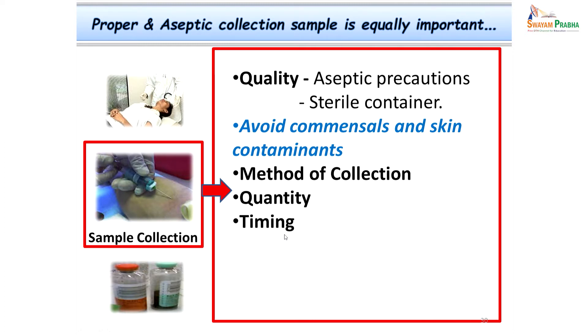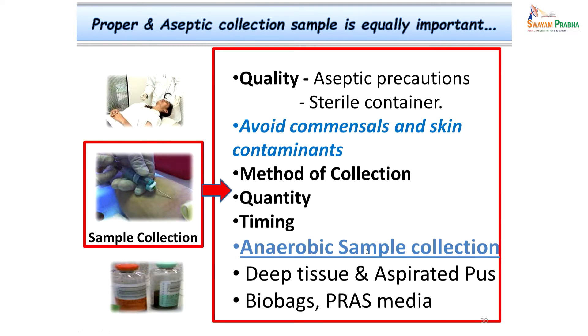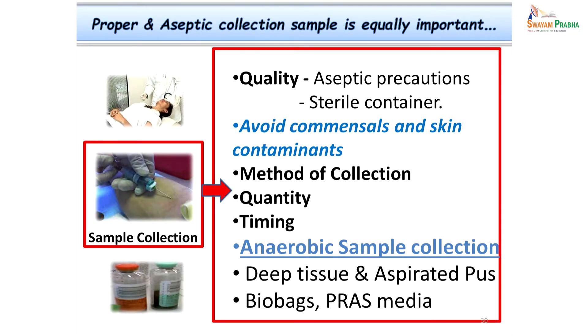Anaerobic sample collection is slightly different from aerobic — the sample should not be exposed to oxygen. If exposed, there is no point in processing further, as important pathogens would already be lost. Samples for anaerobic processing should be collected in suitable containers like biobags, PRAS media, etc. The sample should not come from the superficial exudate or pus already exposed to air — instead, go into deeper parts of the wound and collect tissue biopsy or exudate oozing directly into a syringe or airtight containers.